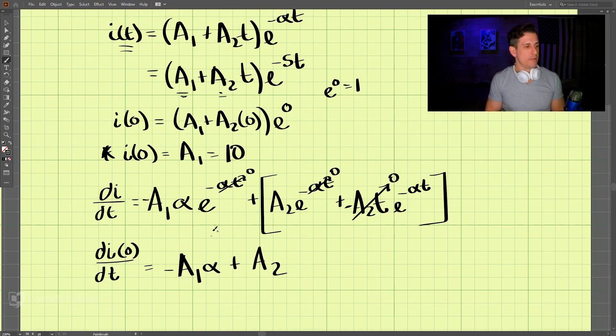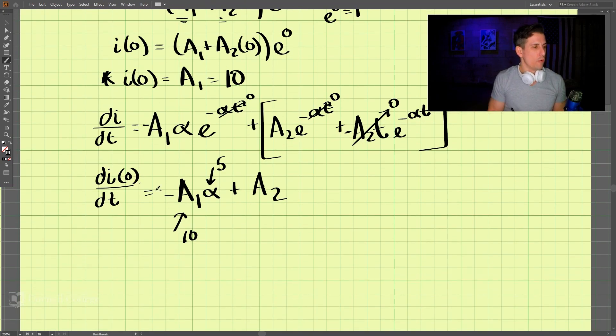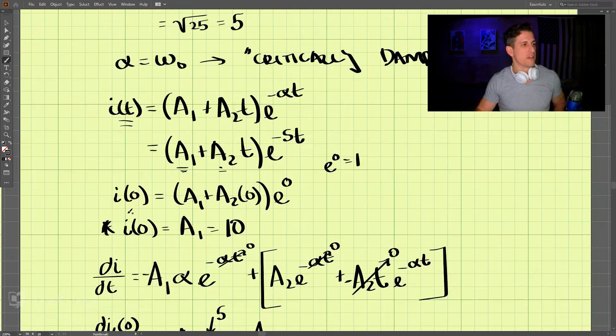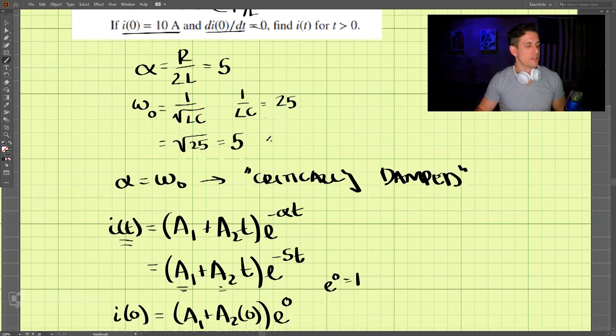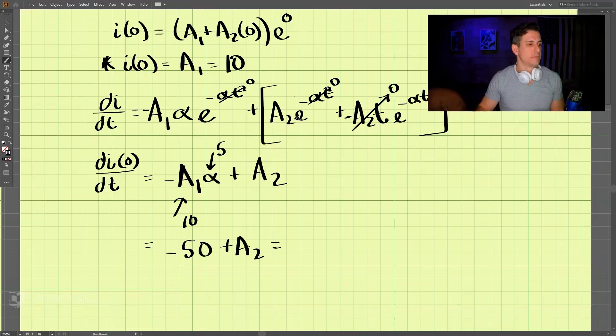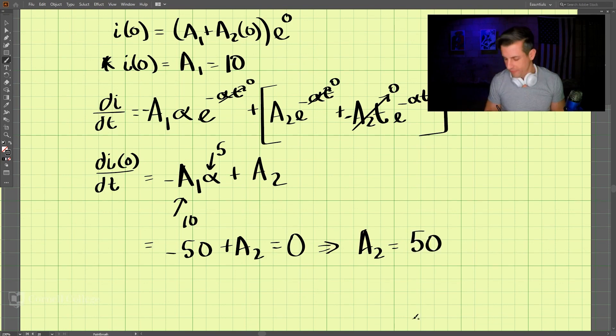And we know alpha is 5 and A1 we just got as 10. So here we have that is equal to negative 50 plus A2 is equal to this value, which is given in the problem, which is 0. So doing that, we come out with A2 is equal to a positive 50.